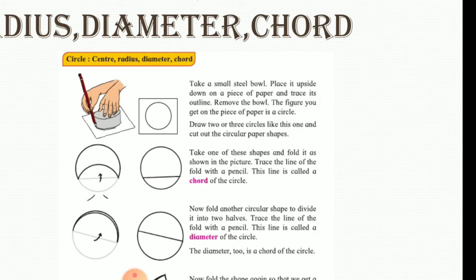Now take one cutout of the circle and fold it as shown in the picture from the side. Now the line that you get on the side of the circle is known as the chord.